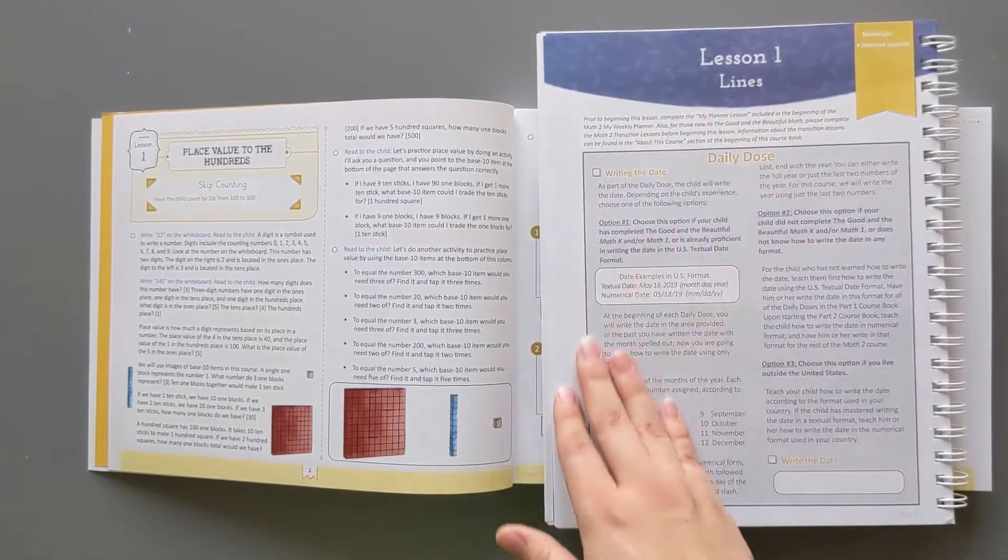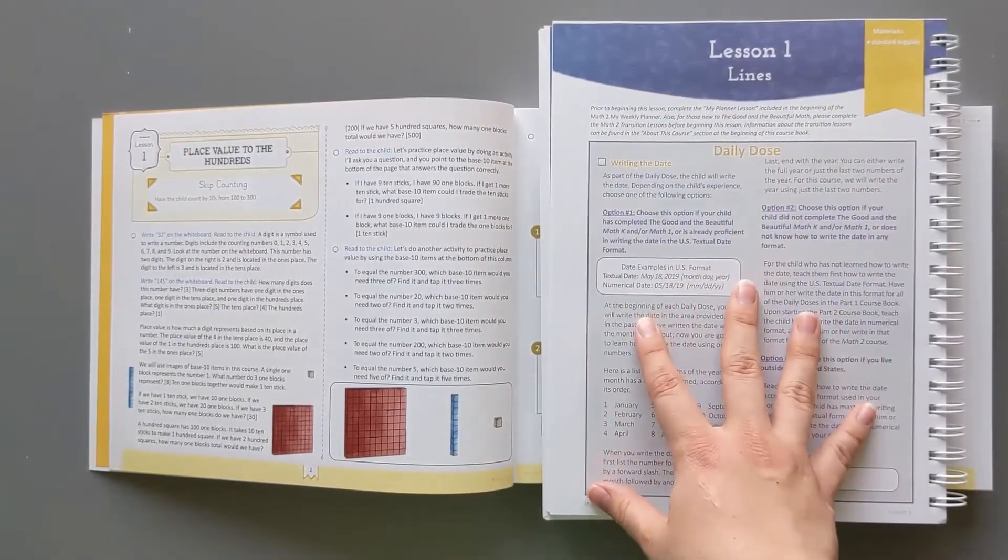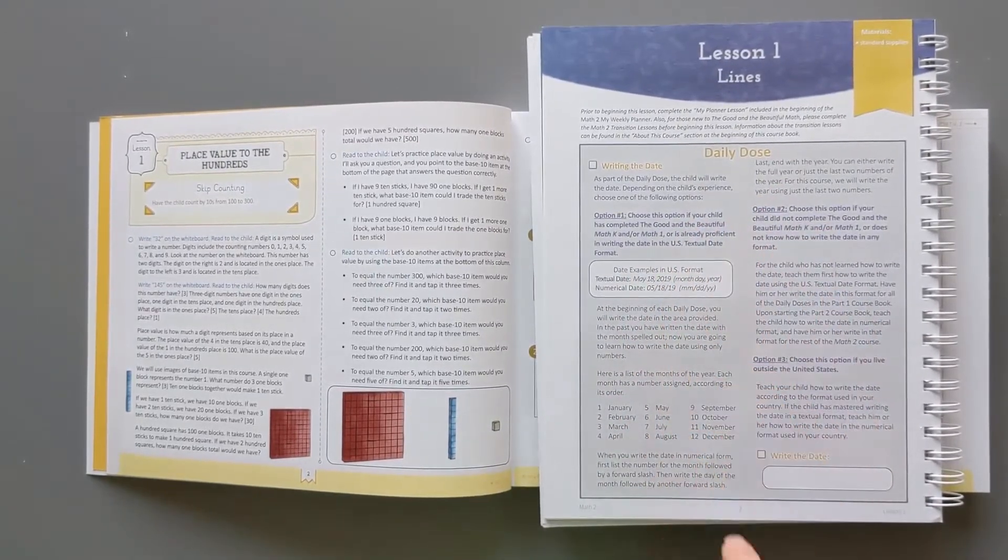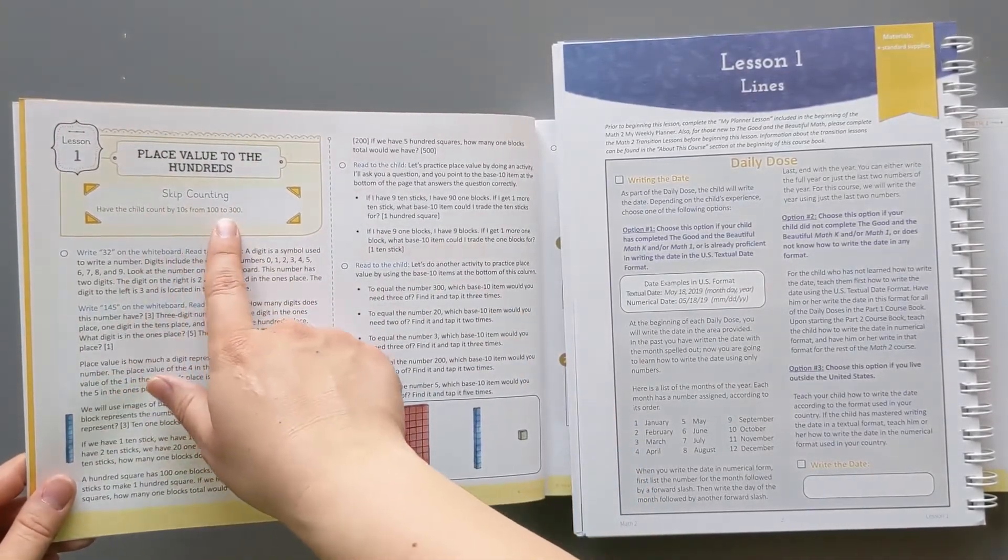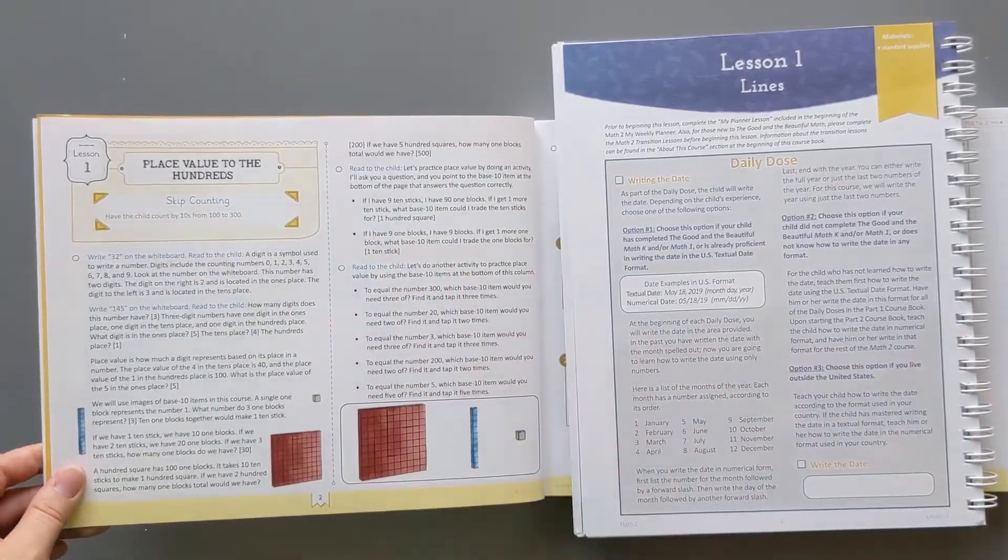So lesson one, in the old version you have a page for the daily dose. Now this is only in the first lesson because they're kind of explaining how to do the daily dose. This isn't normal. We'll compare a later lesson as well to get a better feel for that. In the new one there's no big daily dose. It simply has the child count by tens from 100 to 300. It's just kind of like a small review. We'll see if that stays the same.